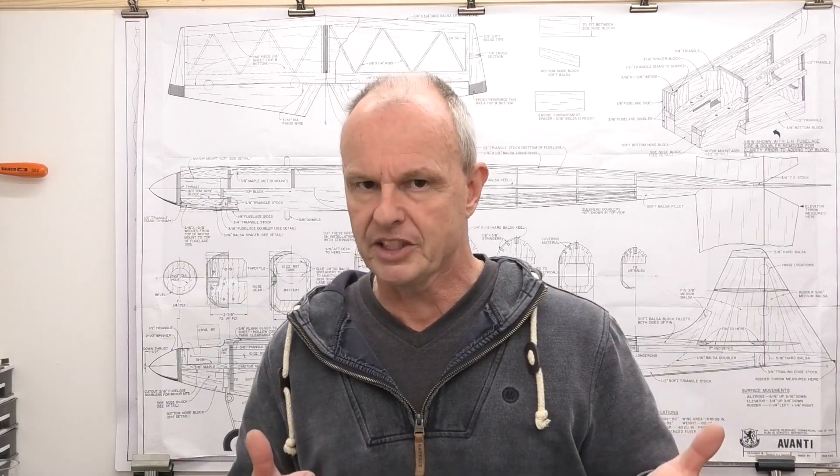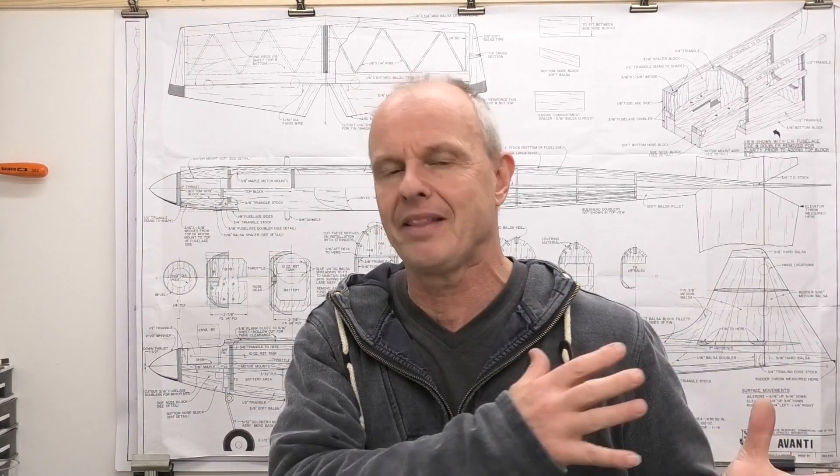Now this is the third and final video in this short series. The first video we were looking at plan selection, and the second video we were looking at how we get that information from the plans onto the balsa so we can actually cut it out and create the components we need to start building that airplane.